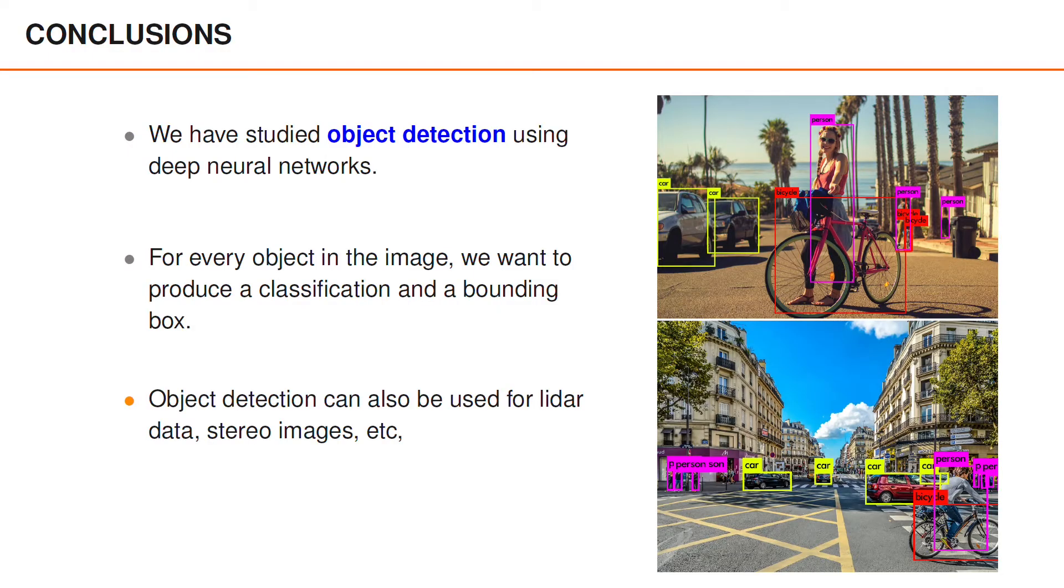The single shot detectors are not only useful for images but can also be used to detect objects in lidar data, in images from stereo cameras and so on. One reason for presenting object detectors in this course is that they can be combined with the multi-object tracking algorithms that we have learned about earlier. With this we conclude the videos about deep learning.